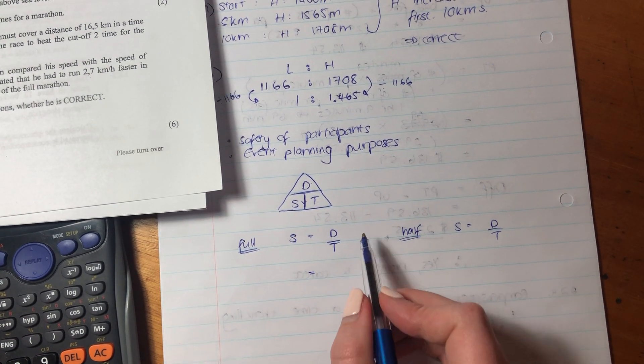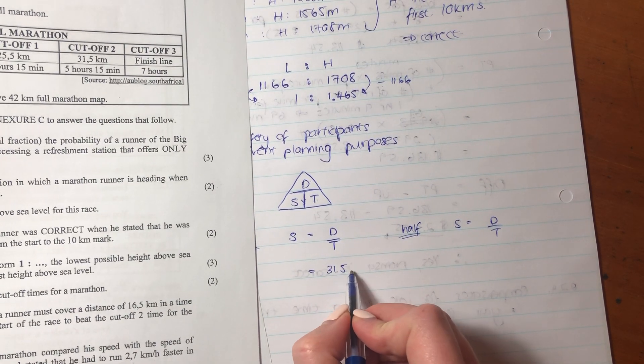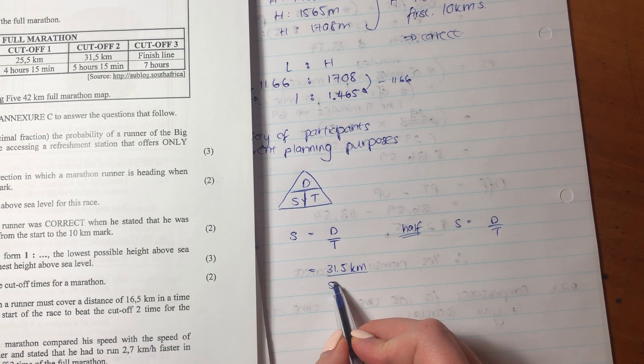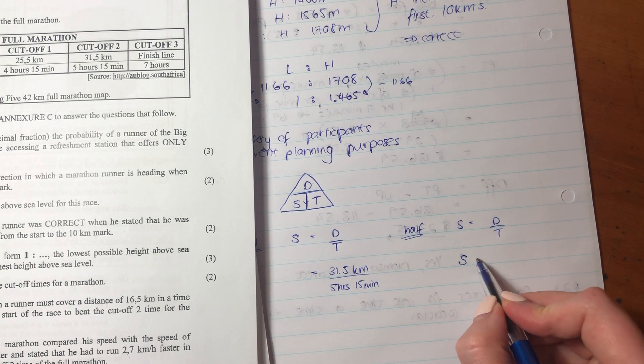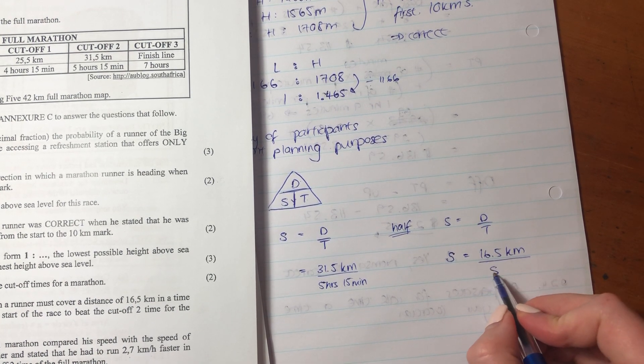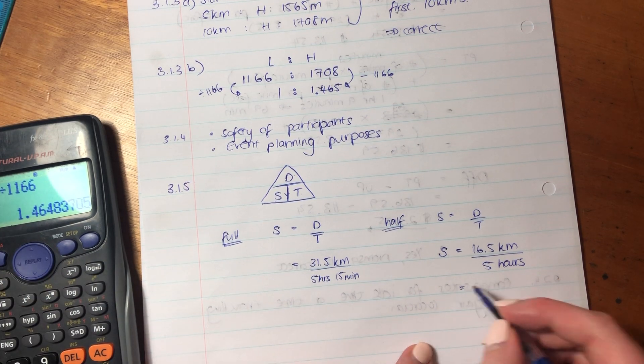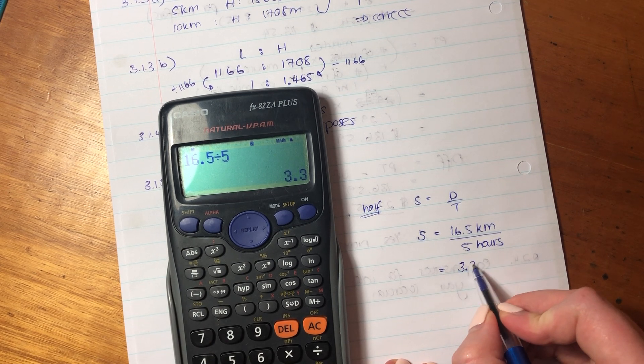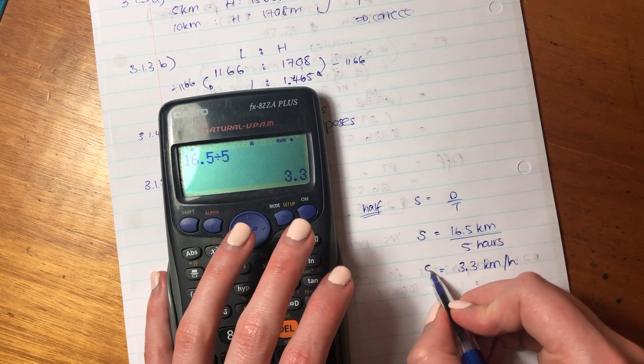So for the full marathon, the distance for the second cutoff time is 31.5 kilometers. And the hours is 5 hours and 15 minutes. Might have to do some converting there. This one for the half marathon, they said was 16.5 kilometers over 5 hours. 16.5 kilometers over 5 hours. So this one's easy to put in a calculator. So let's do the one on that side. So we just say 16.5 divided by 5. So he has to run, if someone's doing a full marathon, they have to run at least 3.3 kilometers per hour.